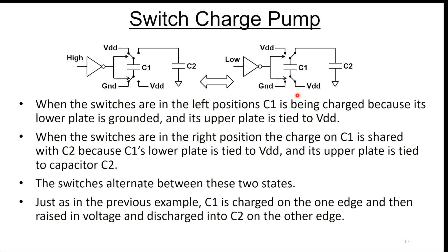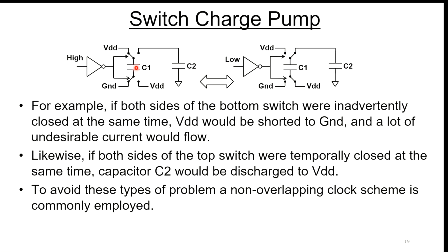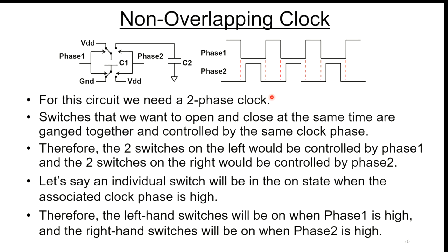The problem with switches is you have to have a break before make configuration. You don't want any of these switches to ever overlap. That's called a non-overlapping clock scheme. If both sides of this switch inadvertently were closed at the same time, you'd short ground to VDD and you'd get a lot of current. You'd really like to open this switch before you close it on the other side. You never want these two switches closed at the same time. In a similar manner, you never want these switches closed at the same time because all that charge would get leaked off back to VDD. You need a non-overlapping clock scheme.